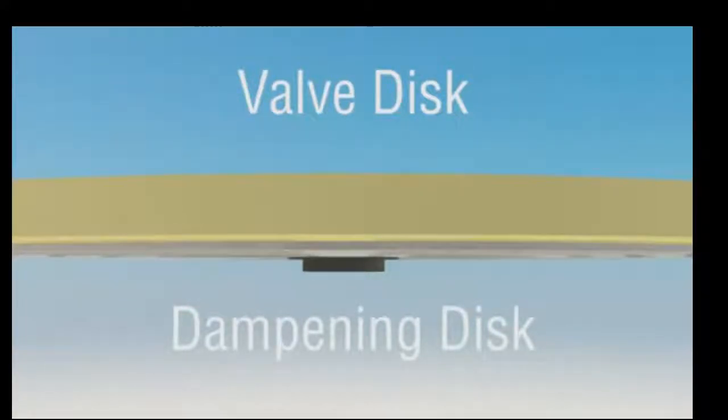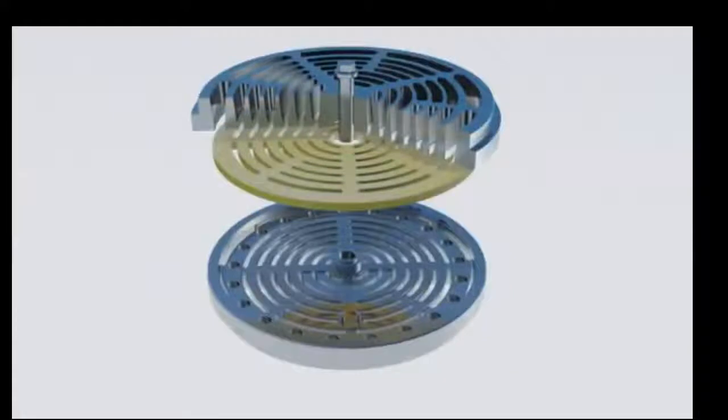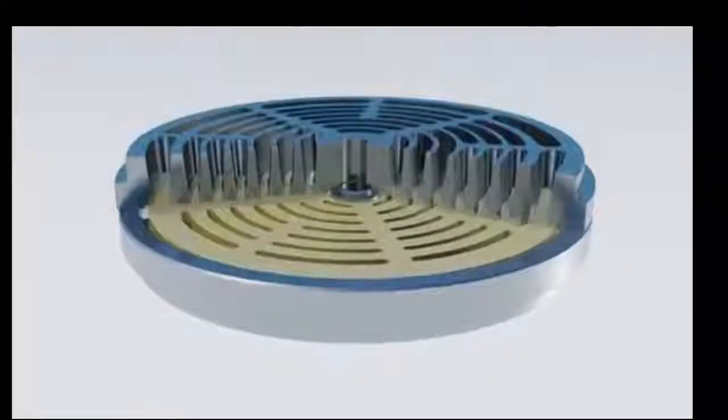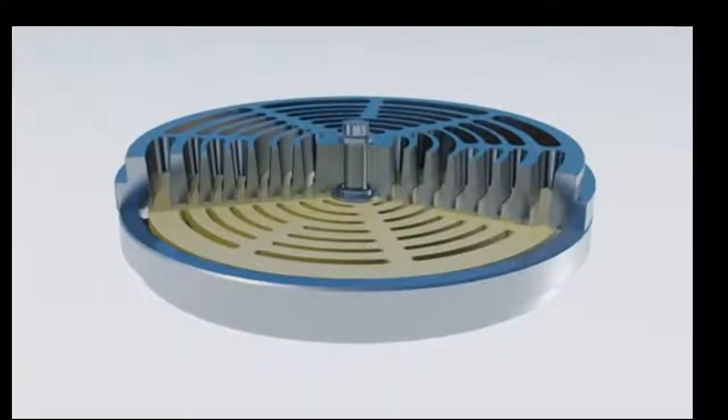When the valve opens, both discs accelerate rapidly, but the brunt of the impact is absorbed by the hardened secondary disc. The secondary disc also dampens out any possible flutter the primary disc would exhibit due to high speed or high differential pressure bounce.